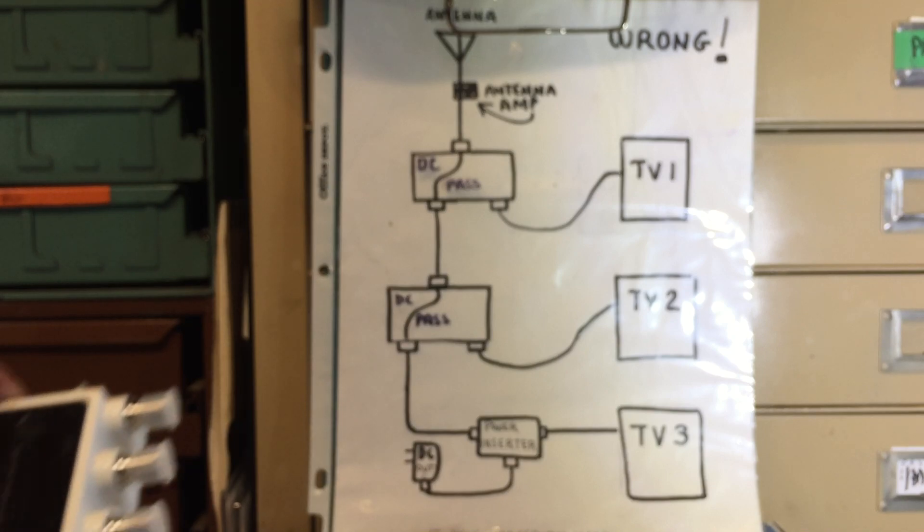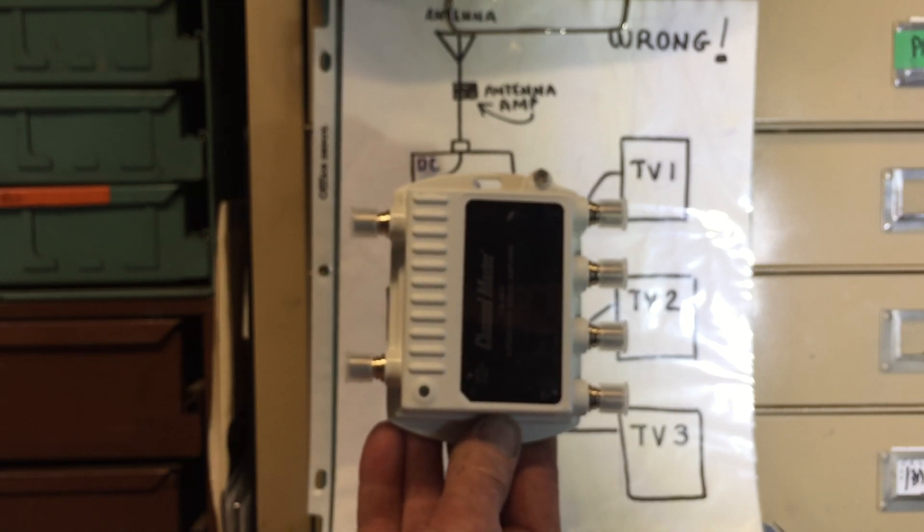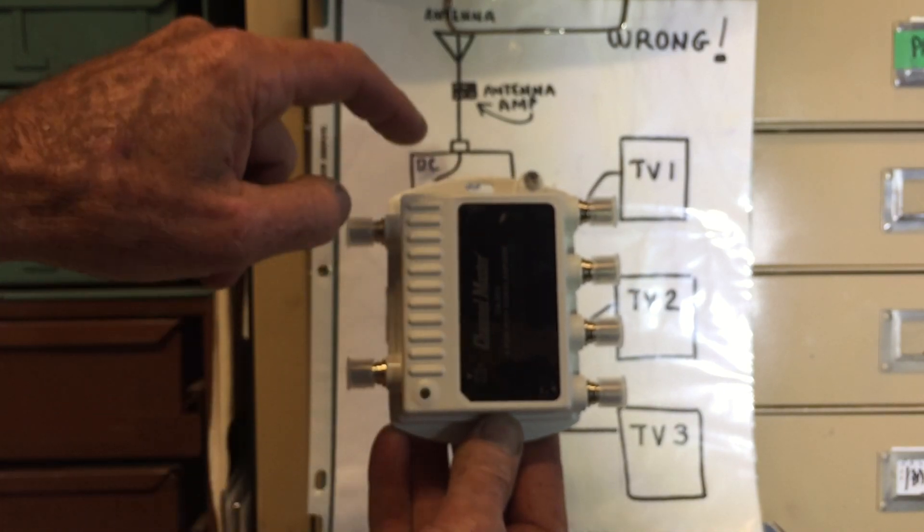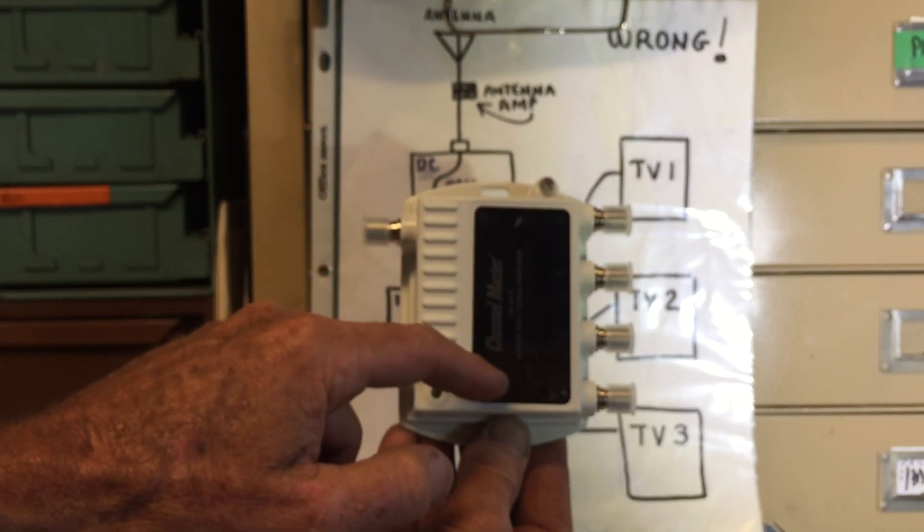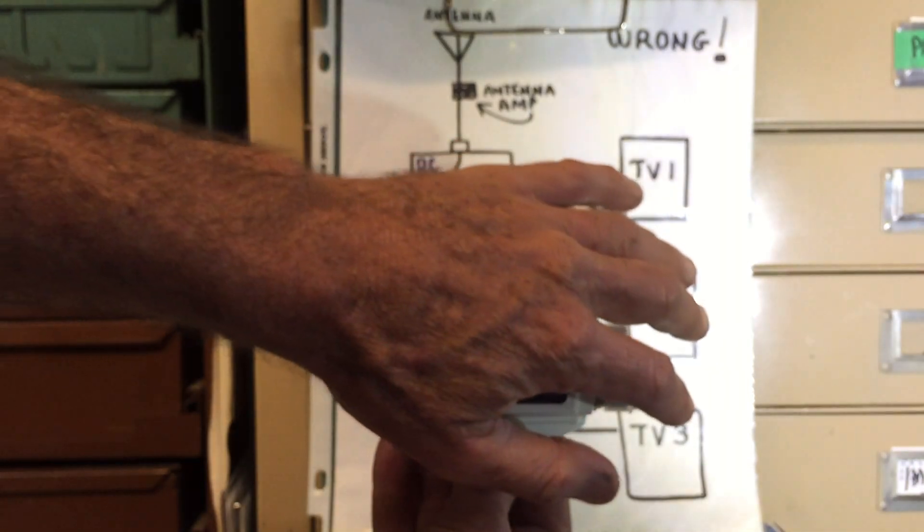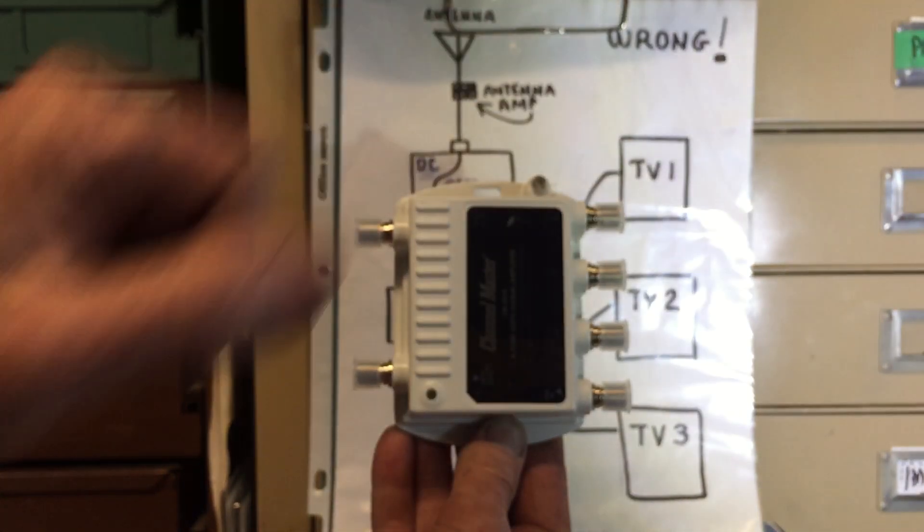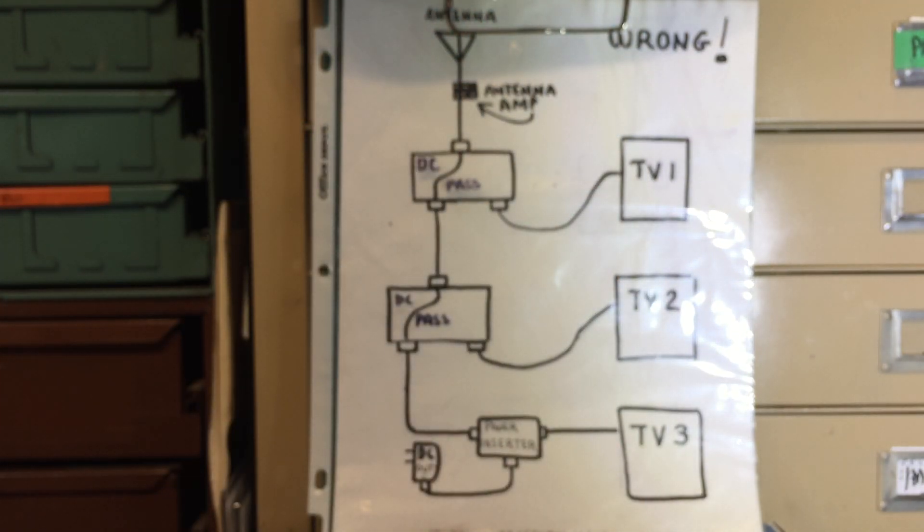Well, the next thing I tried was a distribution amplifier, and that took care of the problem. A distribution amplifier like this one here basically allows you to put your antenna input into one of the inputs here. It's got power going to it and it sends these signals out at a strong level to all of your TVs. This one's designed for four TVs, some will do even more.